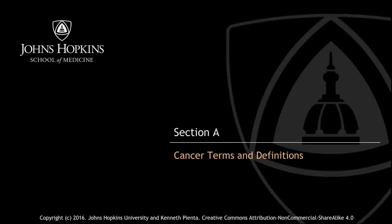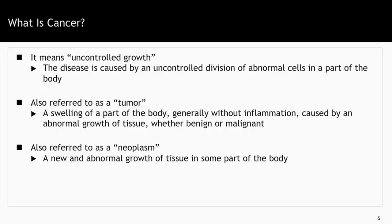Let's start with cancer terms and definitions. What is cancer? In its simplest form, it means uncontrolled growth. It's the disease caused by an uncontrolled division of abnormal cells in a part of the body. It's often also referred to as a tumor. Tumor is defined as a swelling of a part of the body, generally without inflammation, caused by an abnormal growth of tissue, whether benign or malignant. Cancer is also sometimes referred to as a neoplasm, which is defined as a new and abnormal growth of tissue in some part of the body.